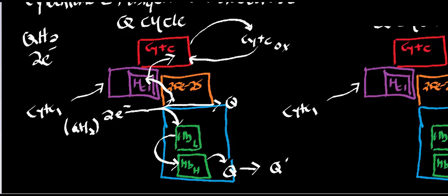So let's regroup. The two electrons from ubiquinol come in and get split: the bottom one goes heme B low potential → heme B high potential → ubiquinone, forming a semiquinone radical. The other electron goes two-iron two-sulfur center → heme C1 → cytochrome C, which carries its single electron to complex four and returns oxidized. We also regenerate a ubiquinone in this first step.